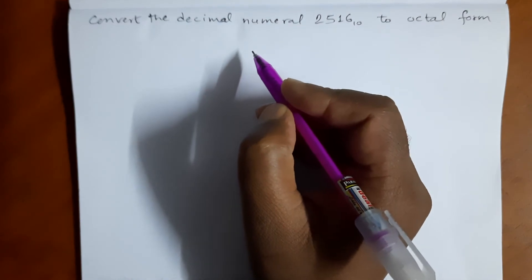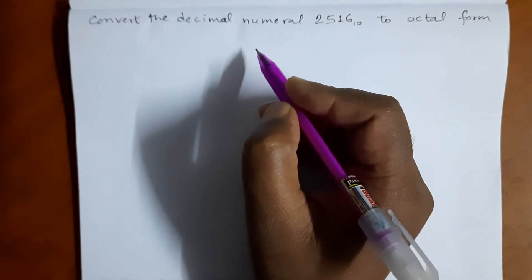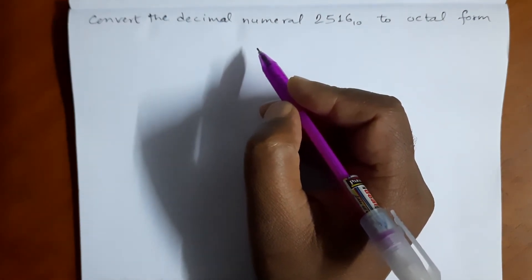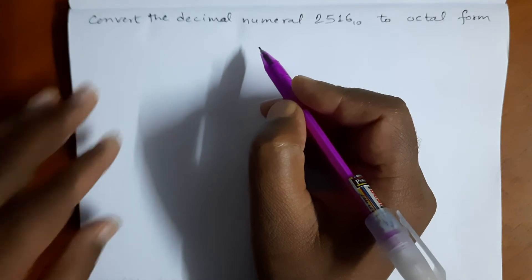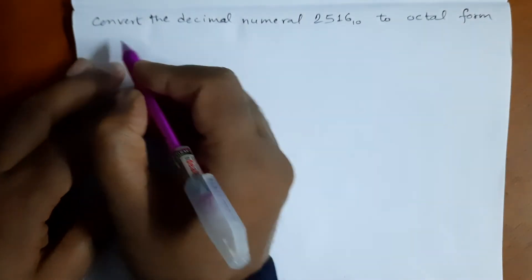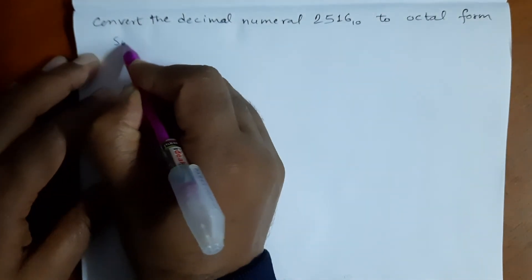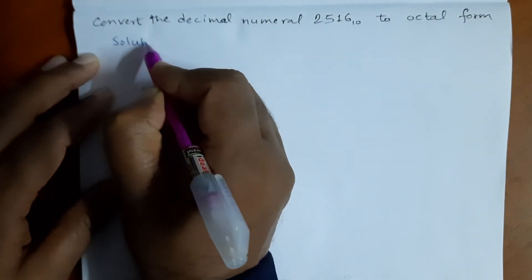It is quite simple: binary means 2, so we divide by 2. Oct means 8, so we divide by 8. Now look at the solution to this question.